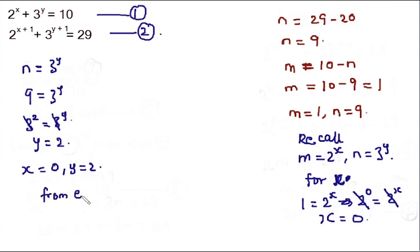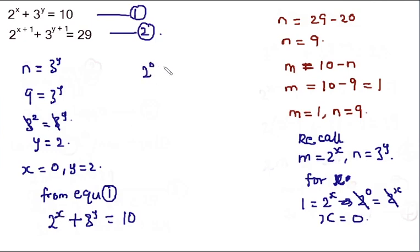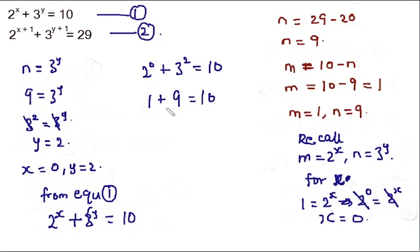To verify, substituting into equation one: 2^x + 3^y = 10. With x = 0 and y = 2: 2^0 + 3^2 = 1 + 9 = 10. Since 10 = 10, the answers x = 0 and y = 2 are correct.